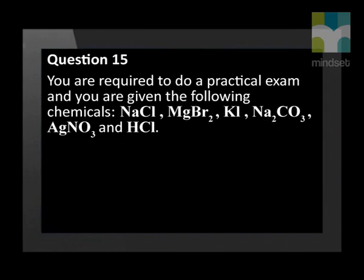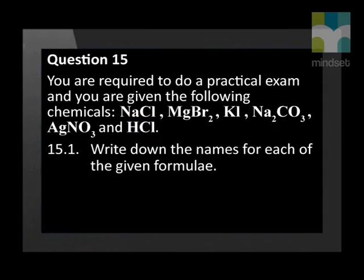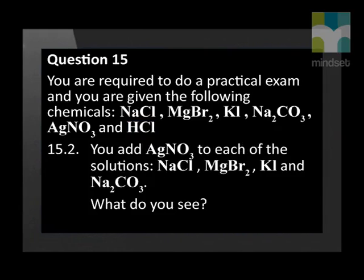You are required to do a practical exam and you are given the following chemicals: NaCl, MgBr₂, KI, Na₂CO₃, AgNO₃, and HCl. Write down the names for each of the given formulae. You add AgNO₃ to each of the solutions: NaCl, MgBr₂, KI, and Na₂CO₃. What do you see?